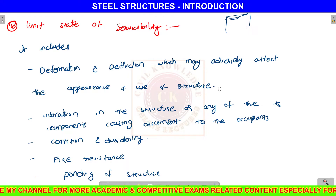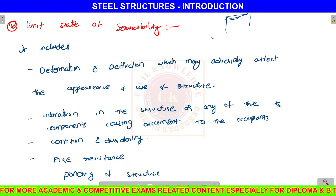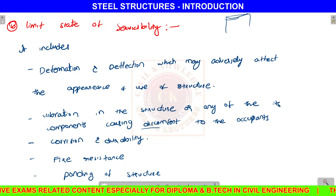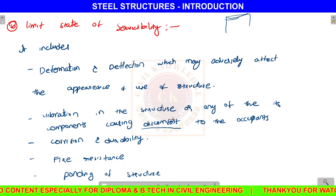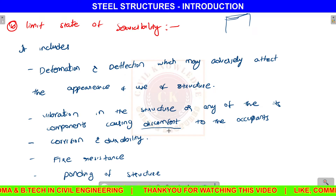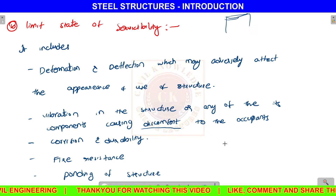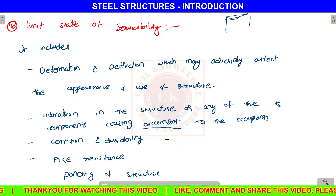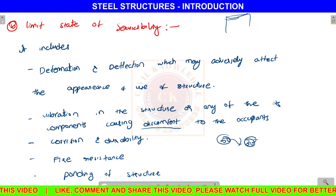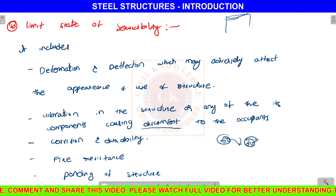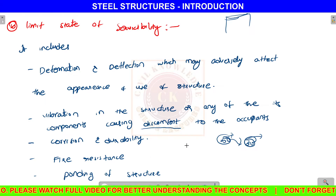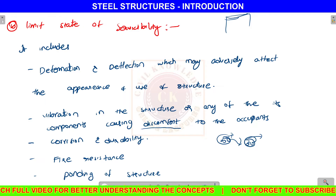After designing, there are loads such as wind loads that cause the structure to vibrate. If it vibrates, there will be discomfort — that meets the serviceability failure condition. Next is corrosion and durability. Corrosion and durability affects the life of the structure. We have serviceability for 50 years; if corrosion causes collapse at 30 years, it is not feasible. Next is fire resistance. The design of the structure must be fire resistant. Next is the ponding of the structure.